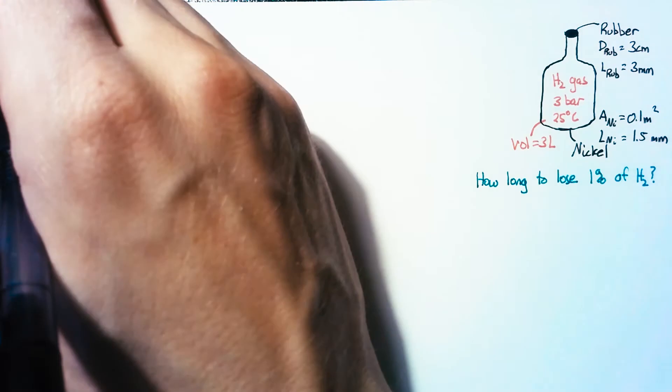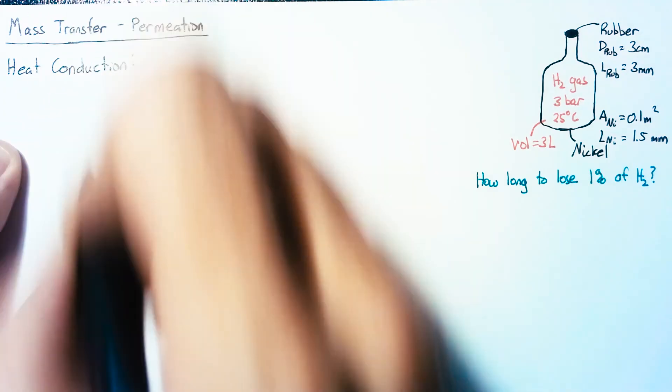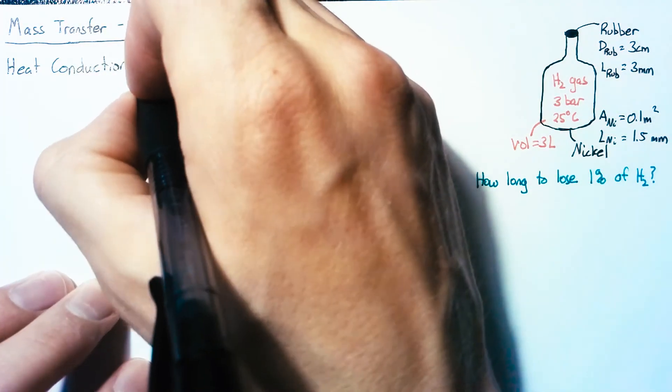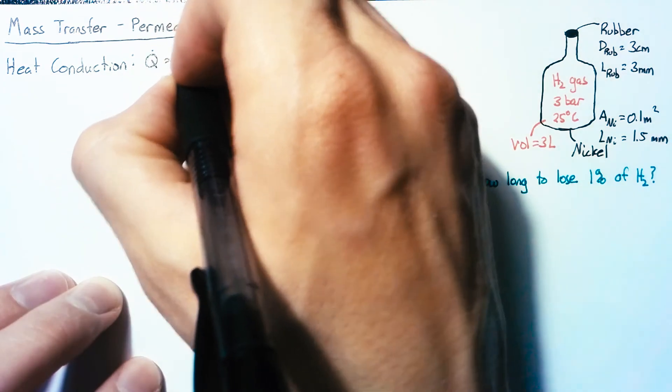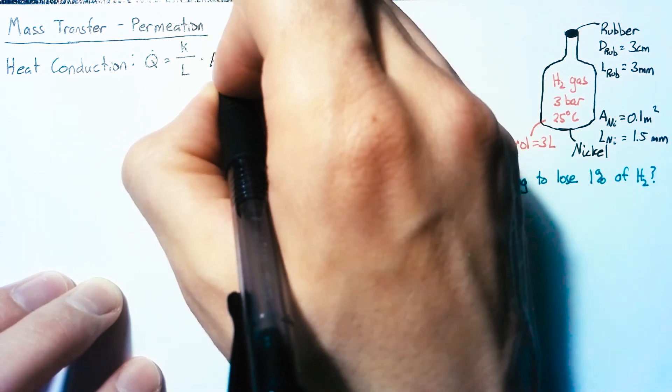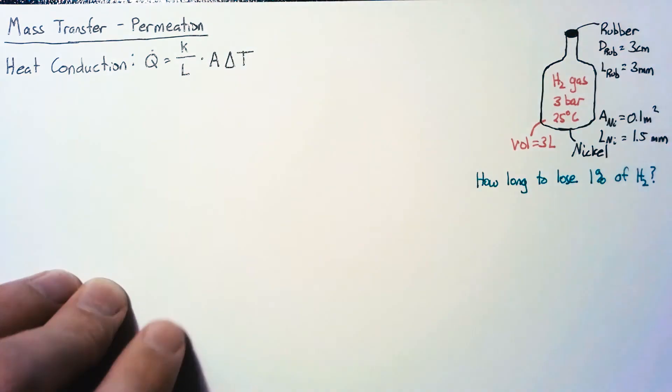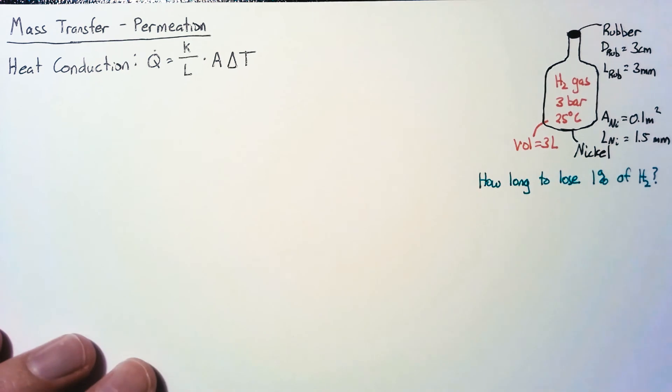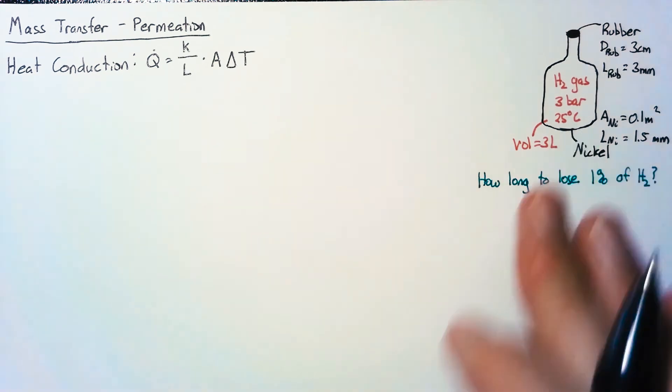To think of this, let's first use heat conduction as an analogy. Heat conduction says that the flow of heat Q is equal to thermal conductivity k divided by thickness L, multiplied by area A, and multiplied by the change in temperature ΔT over our thickness.